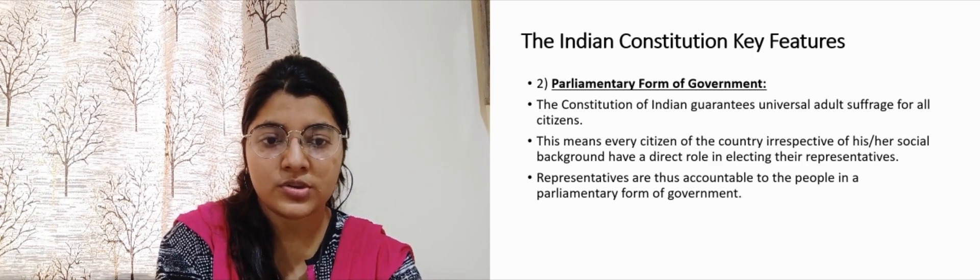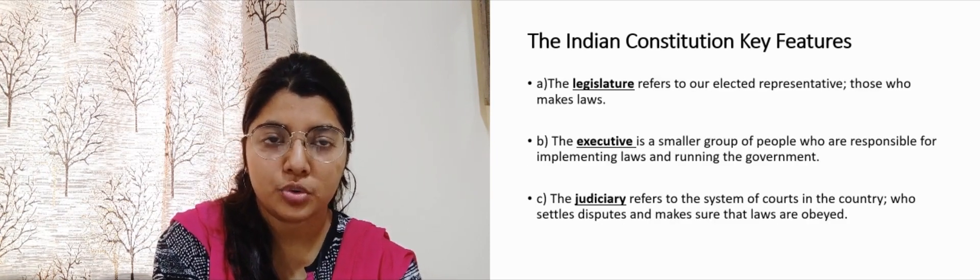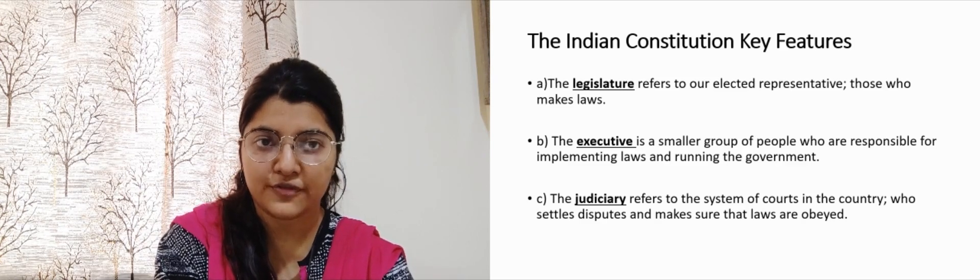Another reason is that the constitution includes the type of government and agreement on certain ideals the country should uphold. For example, when Nepal was a monarchy, it reflected the final authority of the king — only the king was responsible for all decisions. But when Nepal turned into a democracy, people became engaged in decision making through voting, and the process of writing a new constitution began.